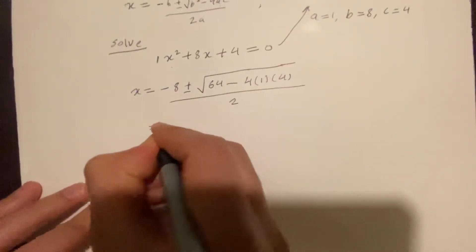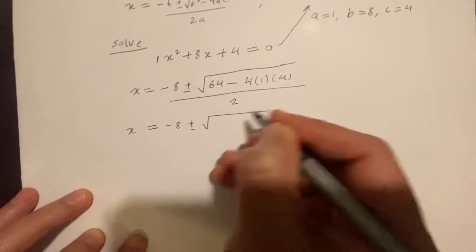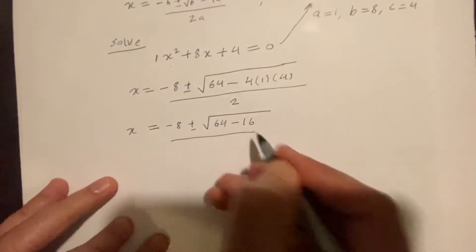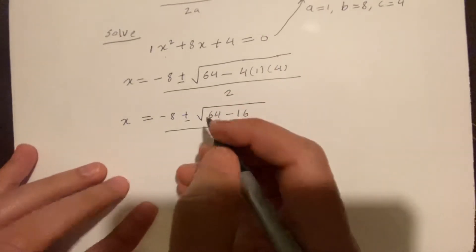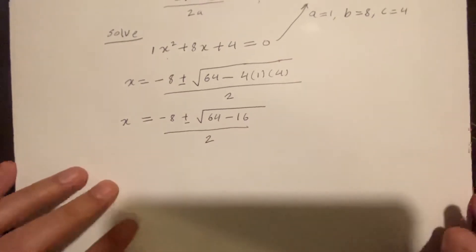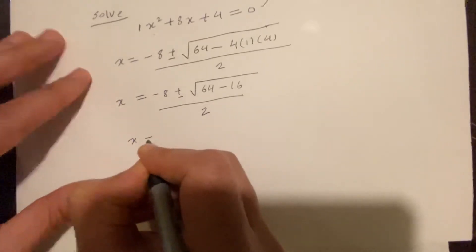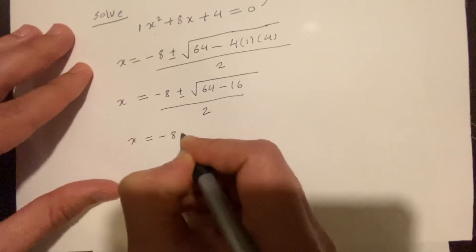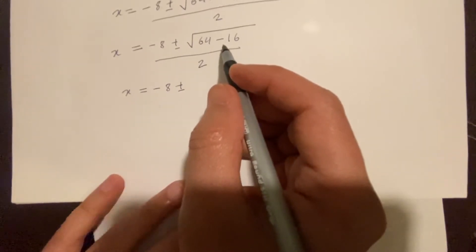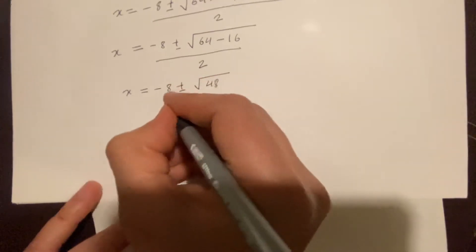So x equals negative 8, plus or minus the square root of 64 minus 16, over 2. And 64 minus 16 is 48, so x equals negative 8 plus or minus the square root of 48, over 2.